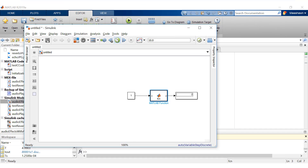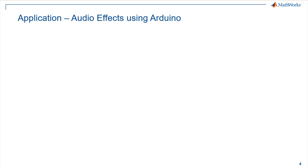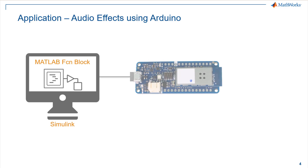We just saw a very basic MATLAB function block implementation in Simulink. The algorithms behind the audio effects implemented in our Simulink model were developed as MATLAB scripts and then used inside MATLAB function blocks in Simulink. Code is then generated and deployed directly to the Arduino MK1000 board from Simulink.